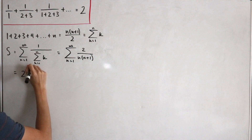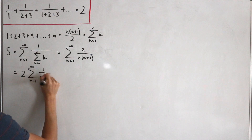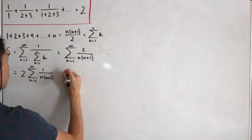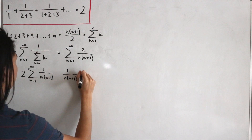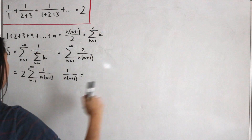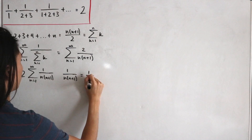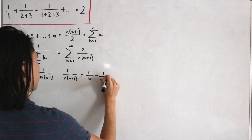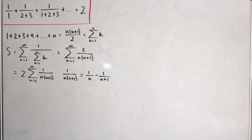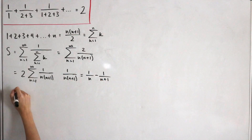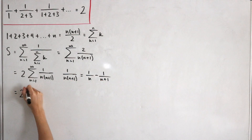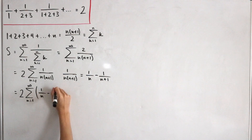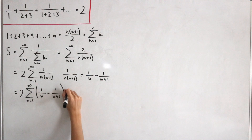From there, we factor out the two: S equals two times the infinite sum from n equals one. Now, notice that one over n times n plus one, by partial fraction decomposition, equals one over n minus one over n plus one. We replace the series with this partial fraction decomposition: two times the infinite sum from n equals one of one over n minus one over n plus one.